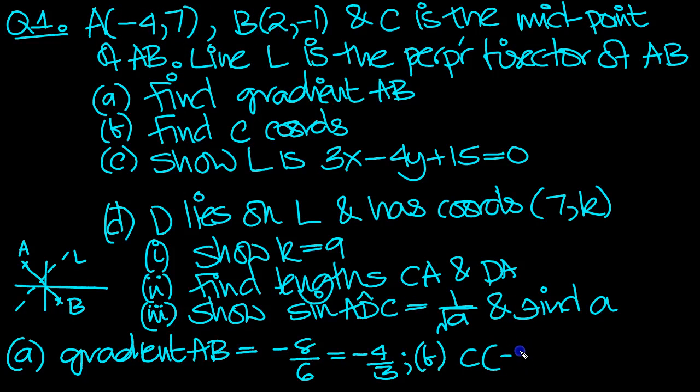Divide that by 2 is -1. Then 7 plus (-1) is 6, divide by 2, which is 3. So there's our coordinate C, which is the midpoint of AB. There's C.